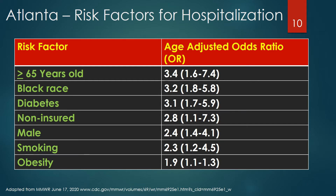This table provides the adjusted odds ratios for characteristics of hospitalized COVID-19 patients in metropolitan Atlanta, Georgia from March to April 2020. Age over 65 was associated with the highest odds ratio for hospitalization, followed by being Black, having diabetes, being non-insured, male, a smoker, and being obese.